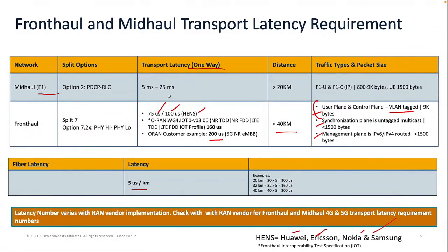Mid-haul or F1 is basically between CU and DU. That latency is a little bit relaxed — five to 25 milliseconds — so you can use lit fiber. In front haul you have to use dark fiber, and that's one reason front haul will have very limited deployment compared to mid-haul. Mid-haul will be like 60–70% of the world. Fiber is very hard to get, even in fiber-rich countries. In mid-haul traffic types it's all IP, and packet size can go from 800 bytes to 9K jumbo frame bytes.